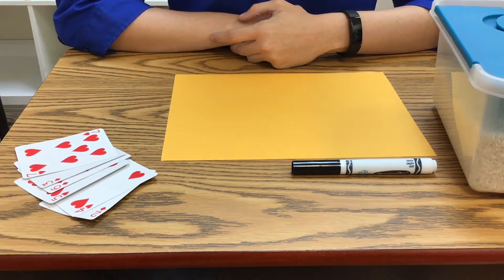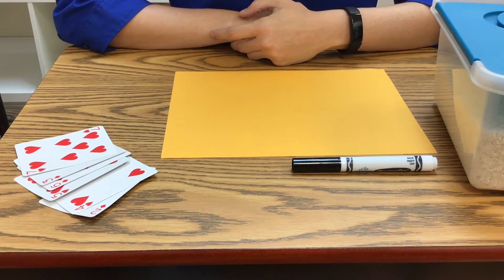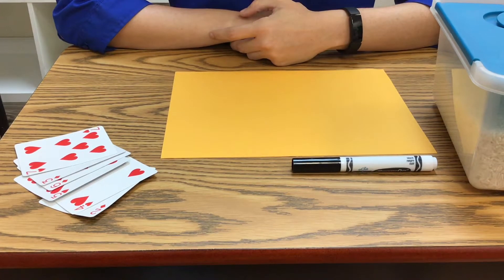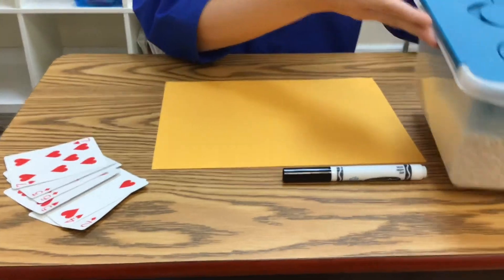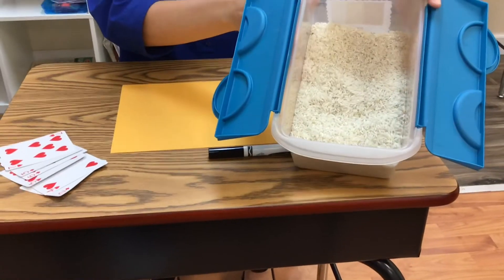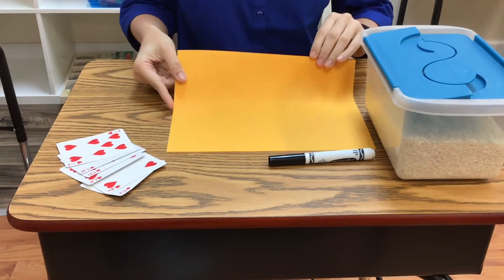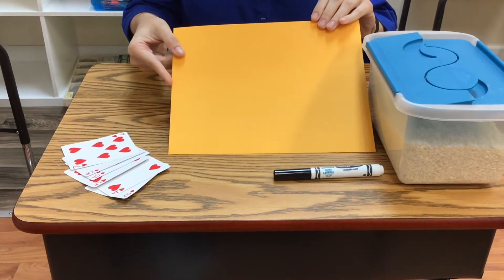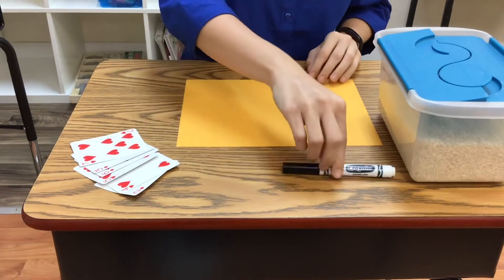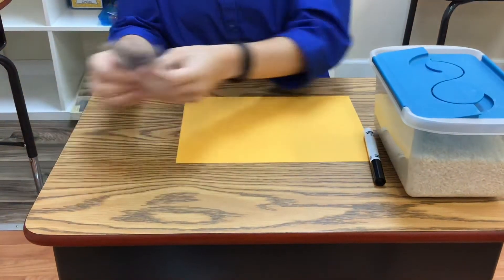For our math activity today, we are going to do a math number hunt. For this activity, you will need a bucket of sand, a piece of paper (I like to use colorful paper), something to write with, and playing cards.